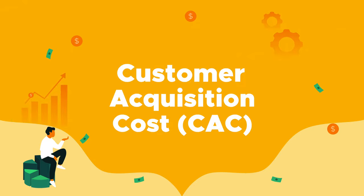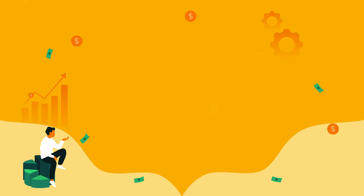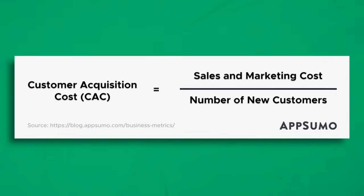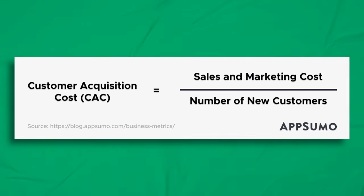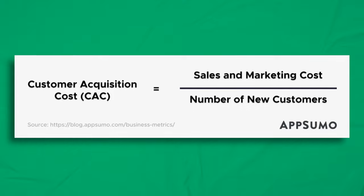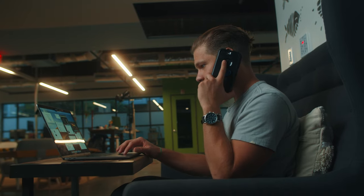Number 5: Customer Acquisition Cost, or CAC. It's the total cost of sales and marketing over a specific period of time to acquire a customer. You can calculate CAC by taking the total marketing spend and sales over a time period and dividing that number by the total number of customers acquired. The resulting cost to acquire one customer is way more accurate than just one marketing metric.